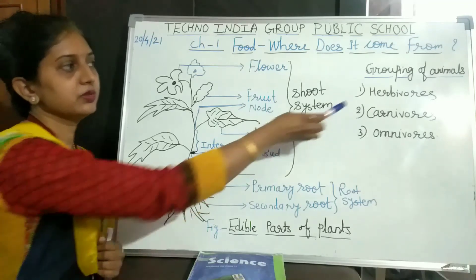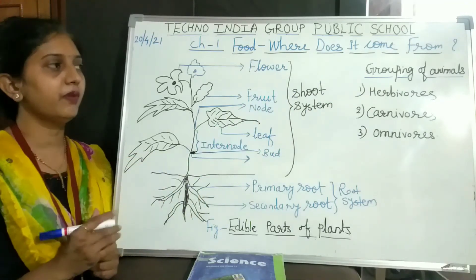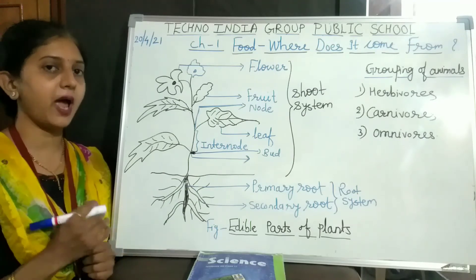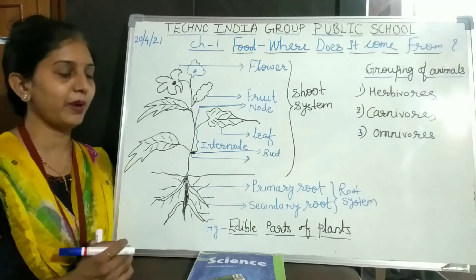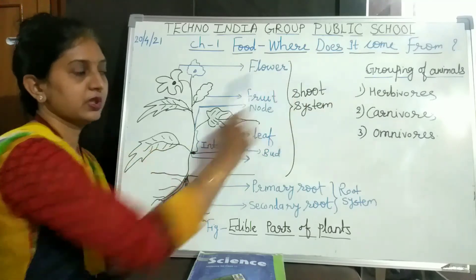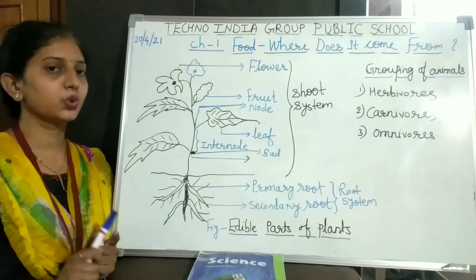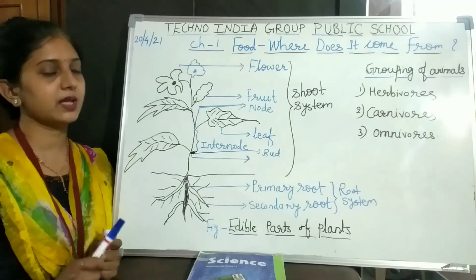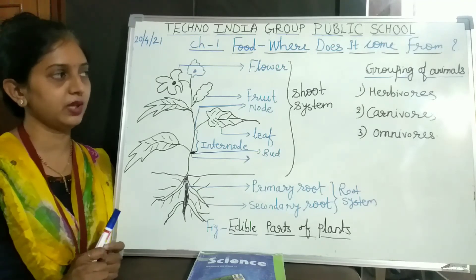The first group is herbivores. The animals which eat only green plants are called herbivores. Examples of herbivores are goat, cow, and buffalo.